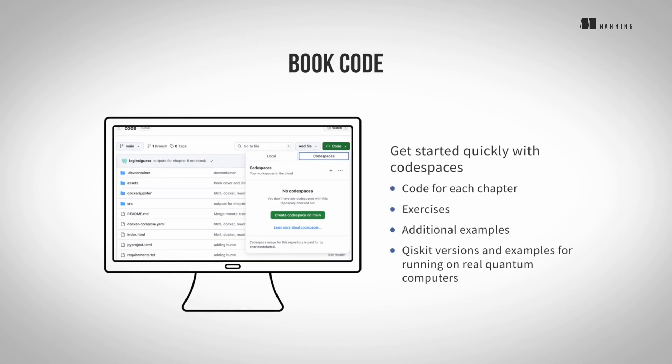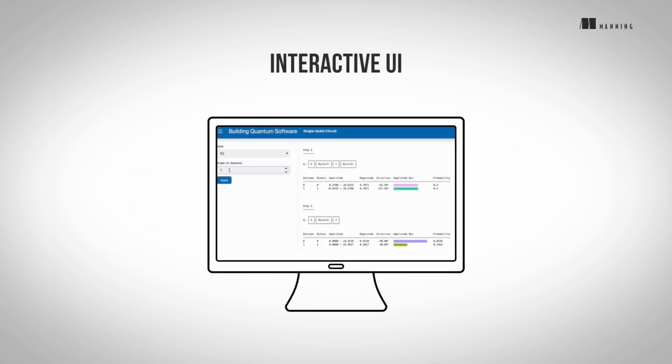We have created several resources to accompany the book. The code that matches the content in the book, as well as exercises and additional examples, can be found in the book's companion GitHub repository. We also have an interactive tool for building circuits to experiment with basic concepts, algorithms, and solutions.